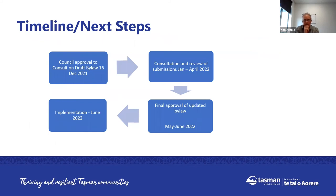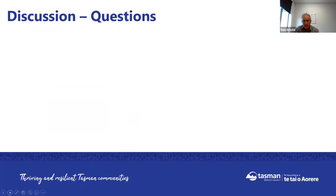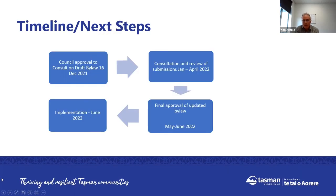In terms of our timeline: council approved the draft to go out to consultation at the end of last year. We are currently asking for feedback and submissions by next week. Once the submissions have been reviewed, we're looking for council to approve the final version of this bylaw, making any changes as a result of submissions, the hearing of those submissions, and deliberations by the review panel. We're aiming to have the amended bylaw adopted by the end of June this year.